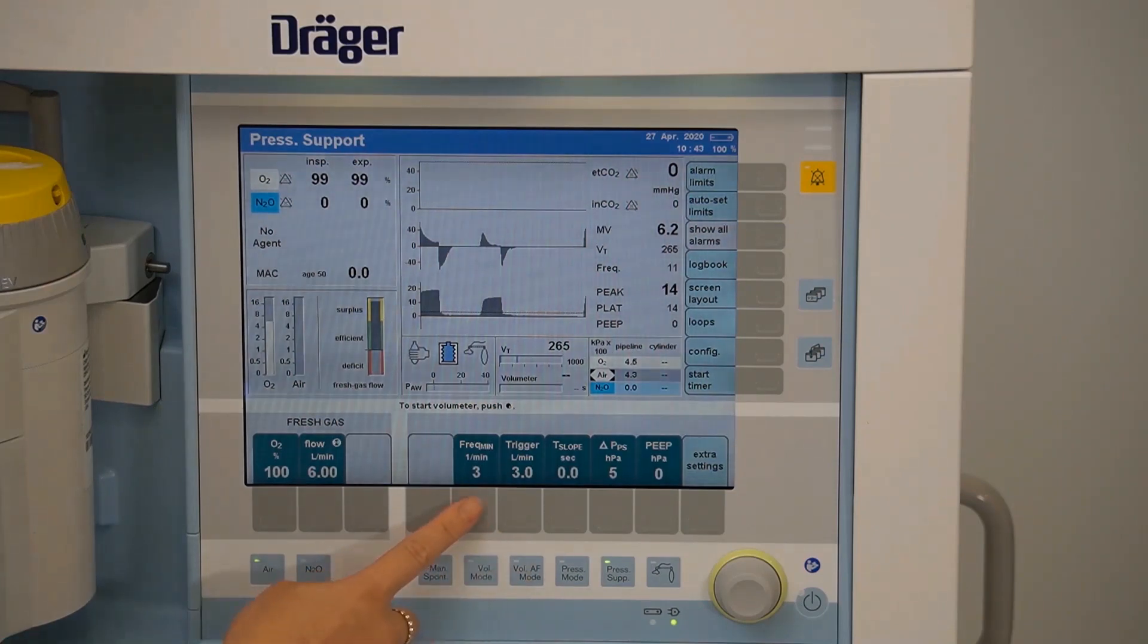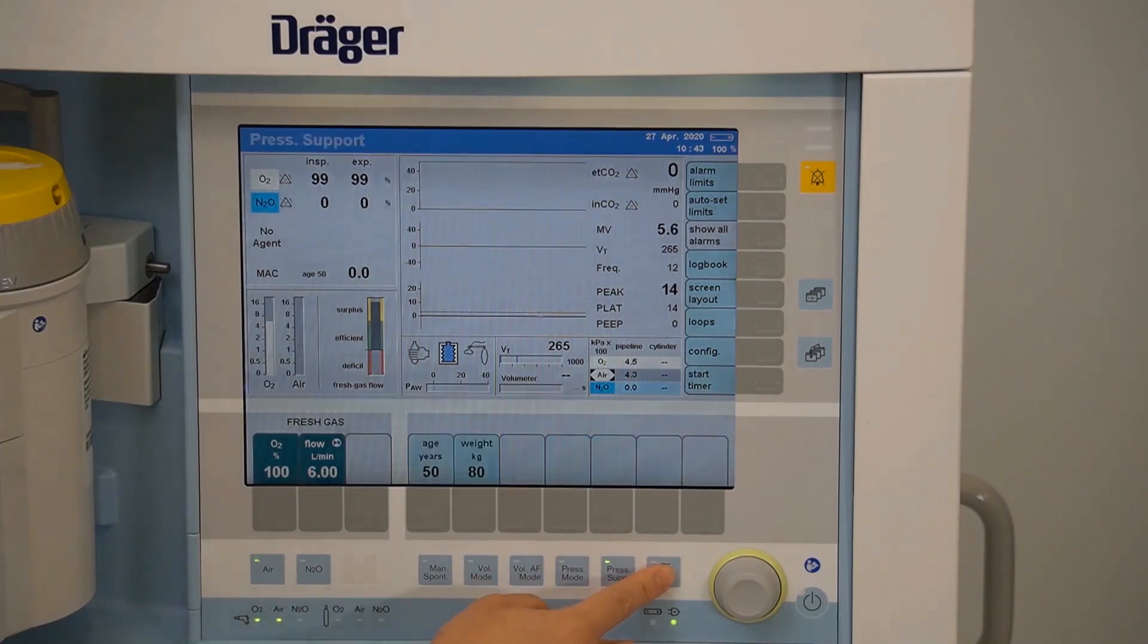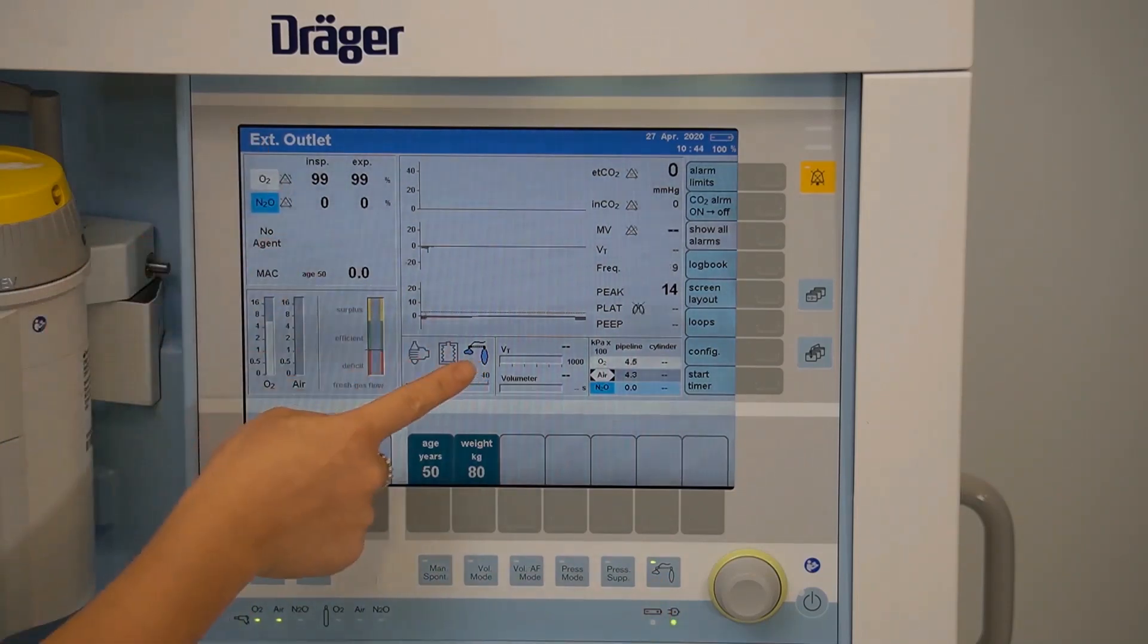Apnea ventilation can also be set by adjusting your frequency of breaths per minute. To access your external fresh gas outlet for non-rebreather circuits, it's confirmed at the top and by this image as well. Your fresh gas will flow from the side of the machine.